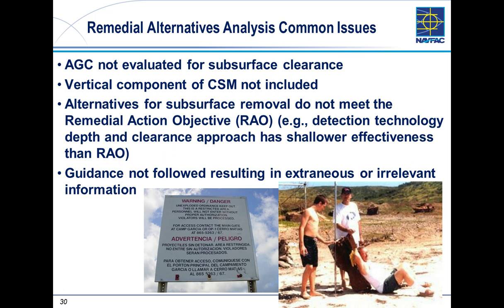Make sure you populate the RAA standard format fields with required information, ensure it's got sufficient information, and evaluate everything. That said, if you end up with an RAA that's got two or three hundred pages, you've done probably more than you need to. The RAA should be a very concise document to evaluate alternatives and make sure the conceptual site model, issues at the site, and remedial action objectives are all addressed by the selected alternatives.